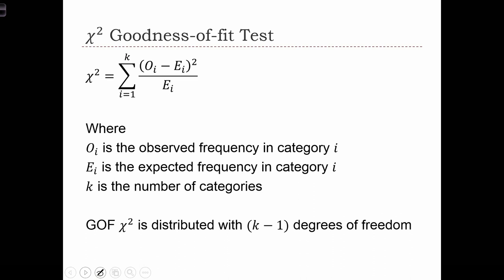The test is very easy to compute. The data are grouped into k different categories. Remember that this is a categorical variable, so k is just the number of categories we have. O sub i is the observed frequency in each category, and E sub i is the expected frequency in each category. Here, the expected is the number of observations we would expect to see in the category if the null hypothesis about the empirical distribution is true.